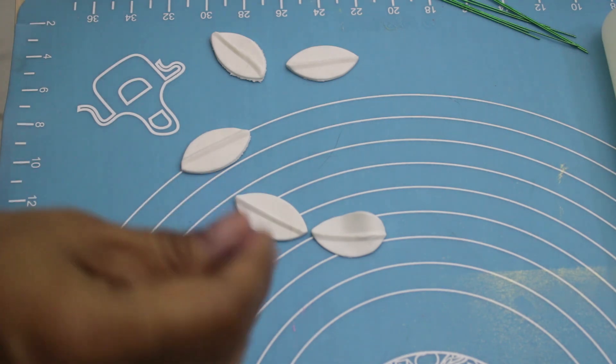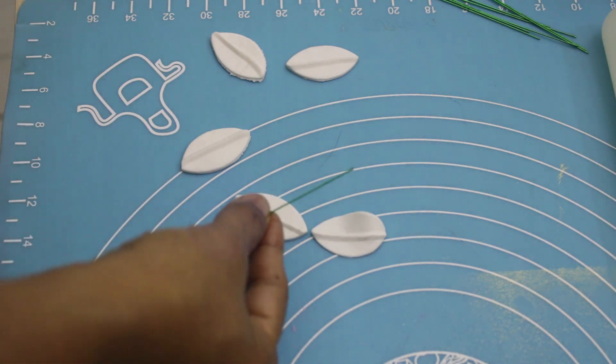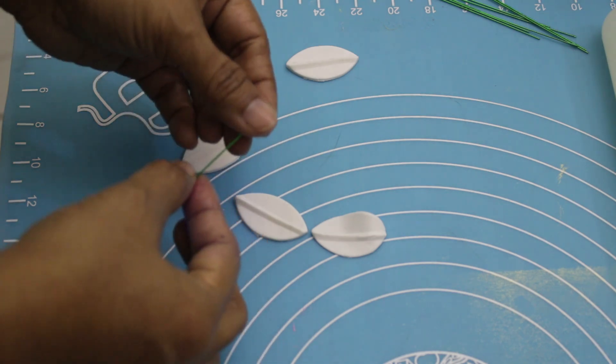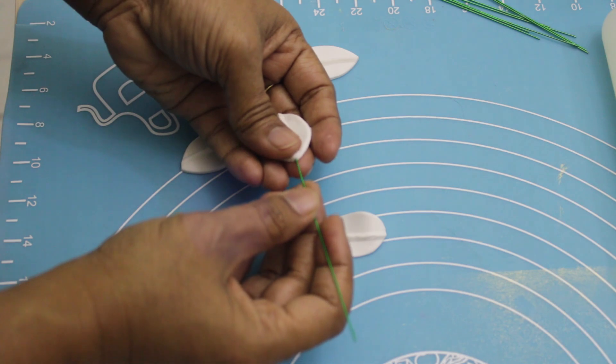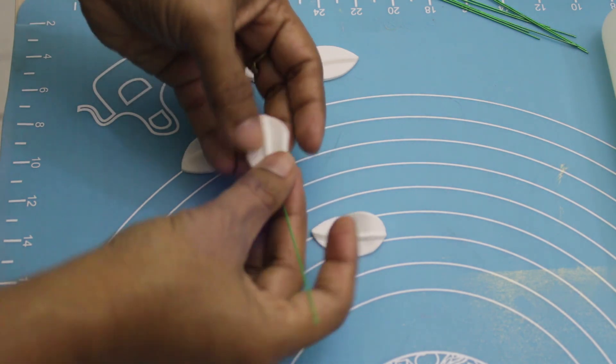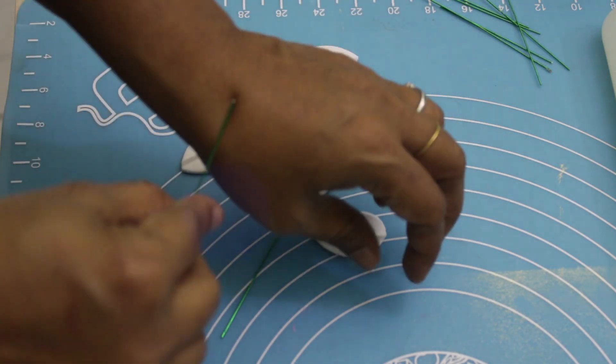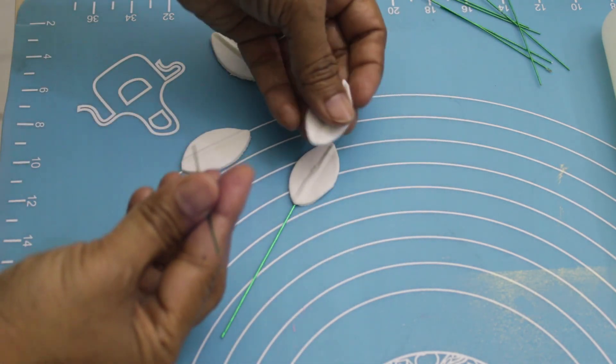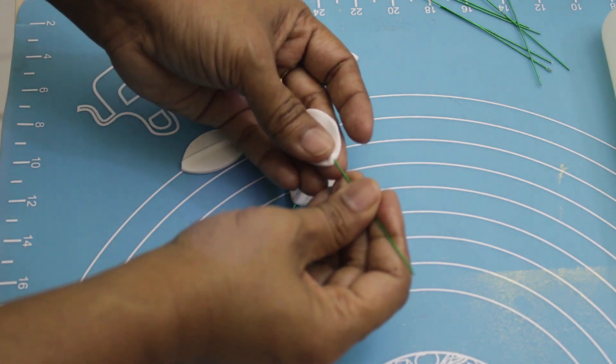I'm using wire and edible glue. Now push it inside like this. Let me show you another one. Apply glue and then push the wire inside the flower.